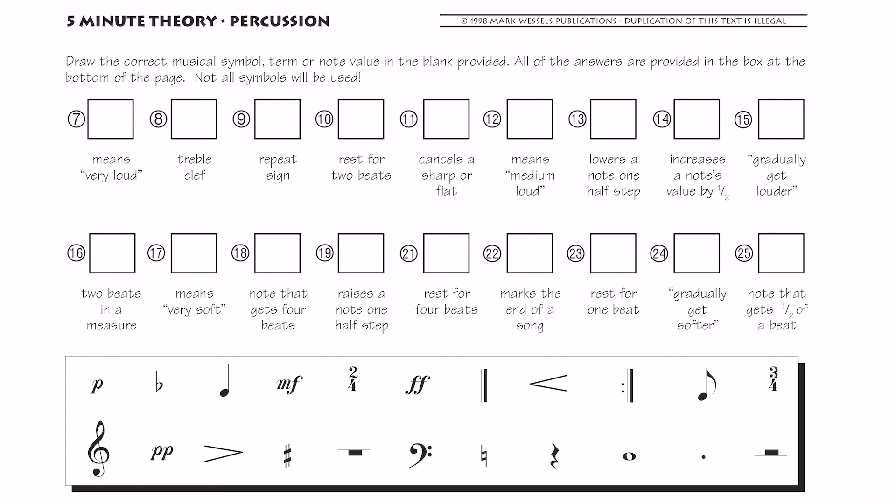That's very simple. If you flip over to the back of the page, you'll notice that all we're doing here is just kind of reviewing a bunch of our notation symbols that we use. So on number seven, what means very loud? So forte means loud, but fortissimo means very loud. Sometimes you kind of see those Fs connected together.